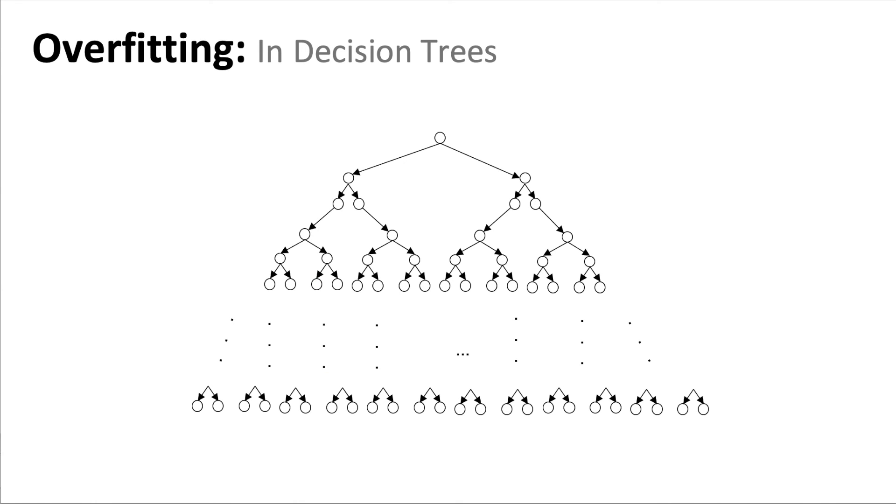So how looks the overfitting in decision trees? Well, this huge tree is done on purpose. In the sense, like in general, when we have one decision tree that is huge, it means that somehow it is overfitting the training data.